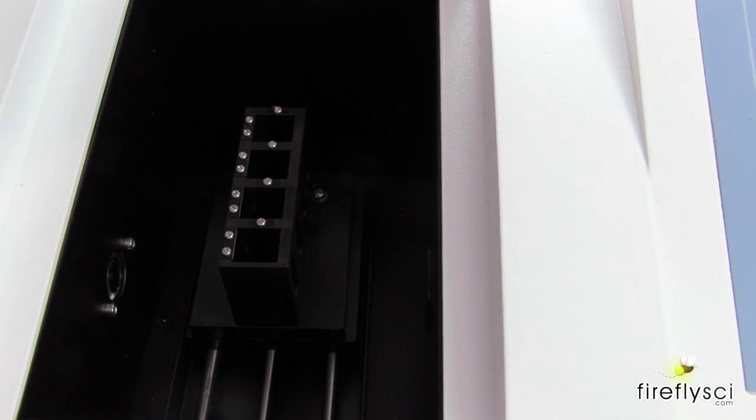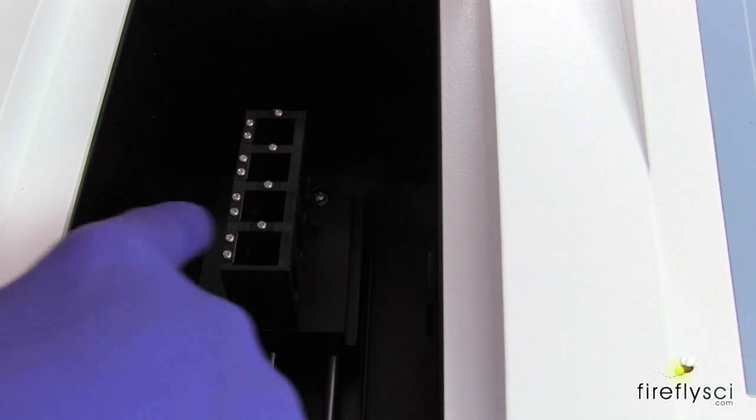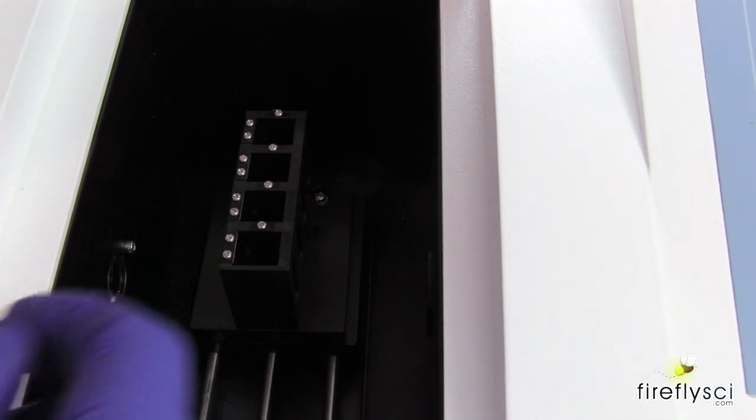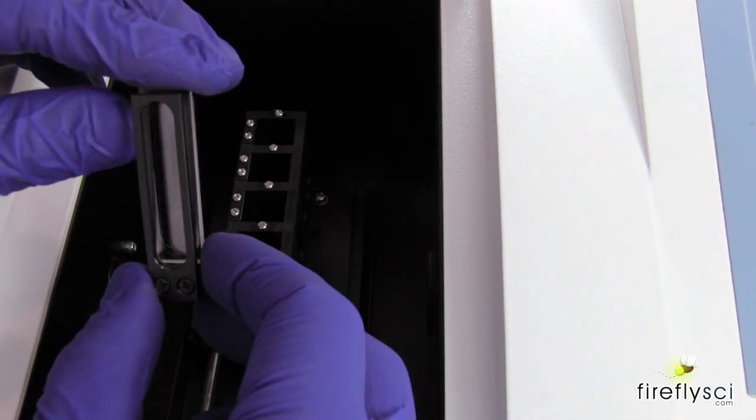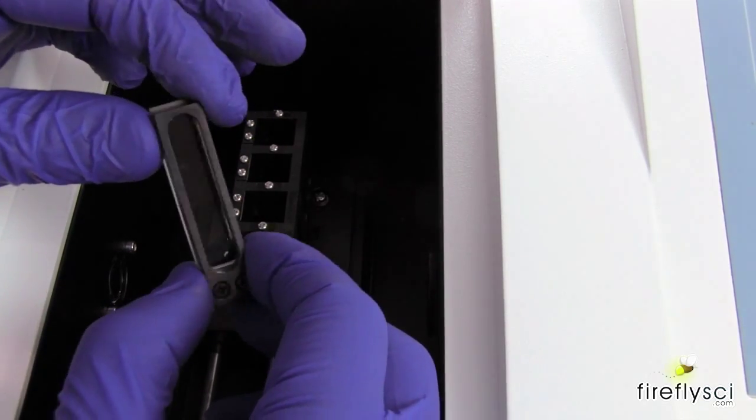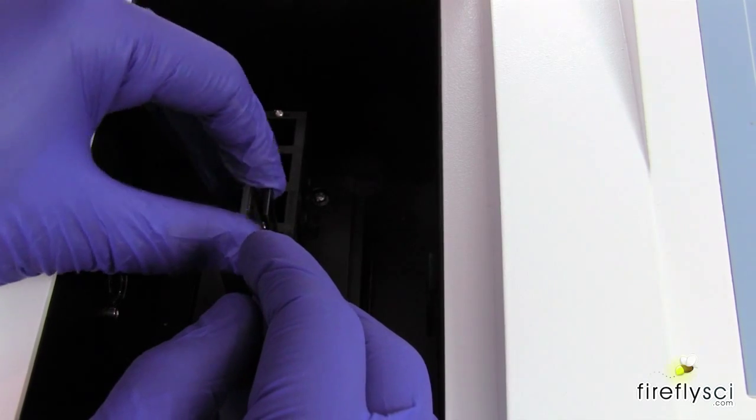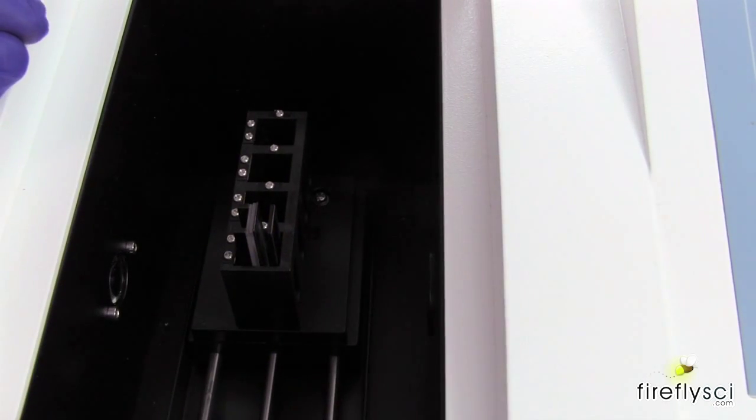So now we're going to show you how to load the A20ES cuvette mount into a spectrophotometer. So we have to make sure that the windows go in the direction of the optical beam. So we want to make sure that we put this in the right way or it's going to mess up the measurements. So for our machine, this is the way it goes in and just push until it's all the way down. And boom, it's all ready to go.